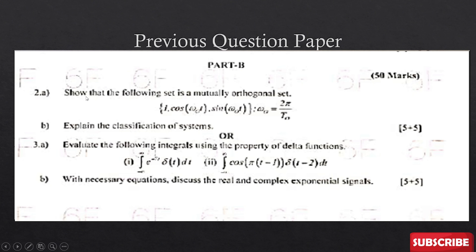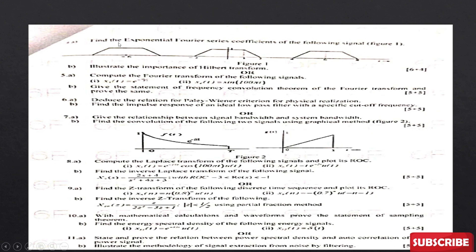In Part B, questions from Unit 1 include: show that a given set is mutually orthogonal, and explain classification of systems — one theory and one problem. Also: evaluate integrals using properties of delta functions, and discuss real and complex exponential signals with necessary equations. From Unit 2: find the exponential Fourier series coefficients of a given waveform, illustrate the importance of Hilbert transform, compute the Fourier transform, and state the convolution theorem of Fourier transforms.